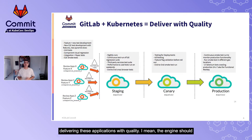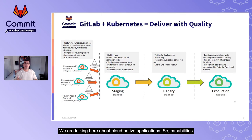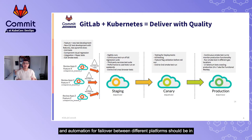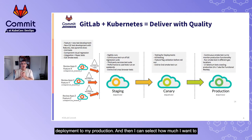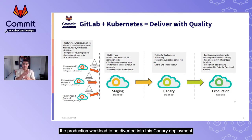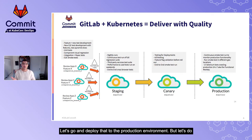It's not only about pushing the application — it's also about delivering with quality. The engine should support capabilities like canary deployment, blue-green deployment, staged deployment, and automated failover between different platforms. GitLab enables this in one platform: I can do staging, then canary deployment to production, controlling what percentage of production workload is diverted to the canary instance before approving a full staged production deployment.